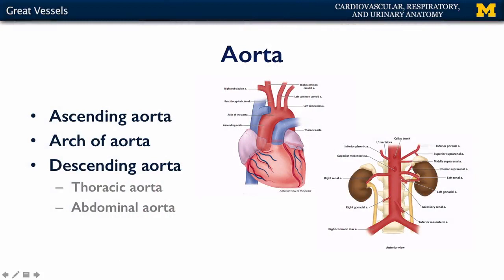There are two branches of the ascending aorta, as you will recall from our discussion of the heart. They are the left and the right coronary arteries. These coronary arteries specifically supply the heart with oxygenated blood.